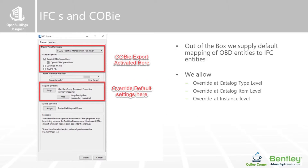We have the ability to produce IFC and Cobie spreadsheets. Out of the box, we've provided a method to map the catalog types and instances to IFC definitions, so an OBD wall becomes an IFC wall. There are always circumstances where users have requested control over this, so we allow you to override the default settings at catalog type level, item level, or instance level, to produce well-formed IFC files with all the intelligence from the data group system.